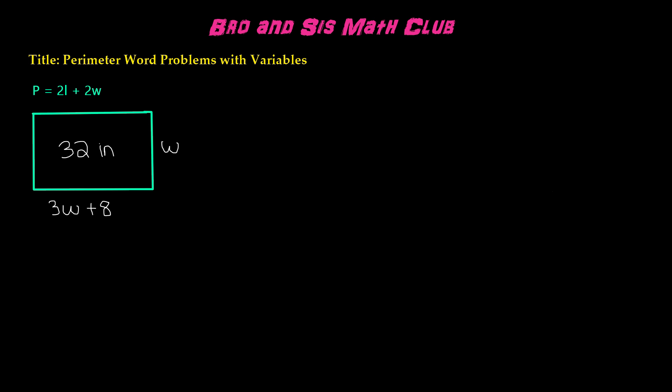In this case, we have the width as the variable w because the width is unknown, and so is the length. But we know that the length is 3 times the width plus 8. That means it is 8 more than 3 times the width, and the perimeter is 32 inches.